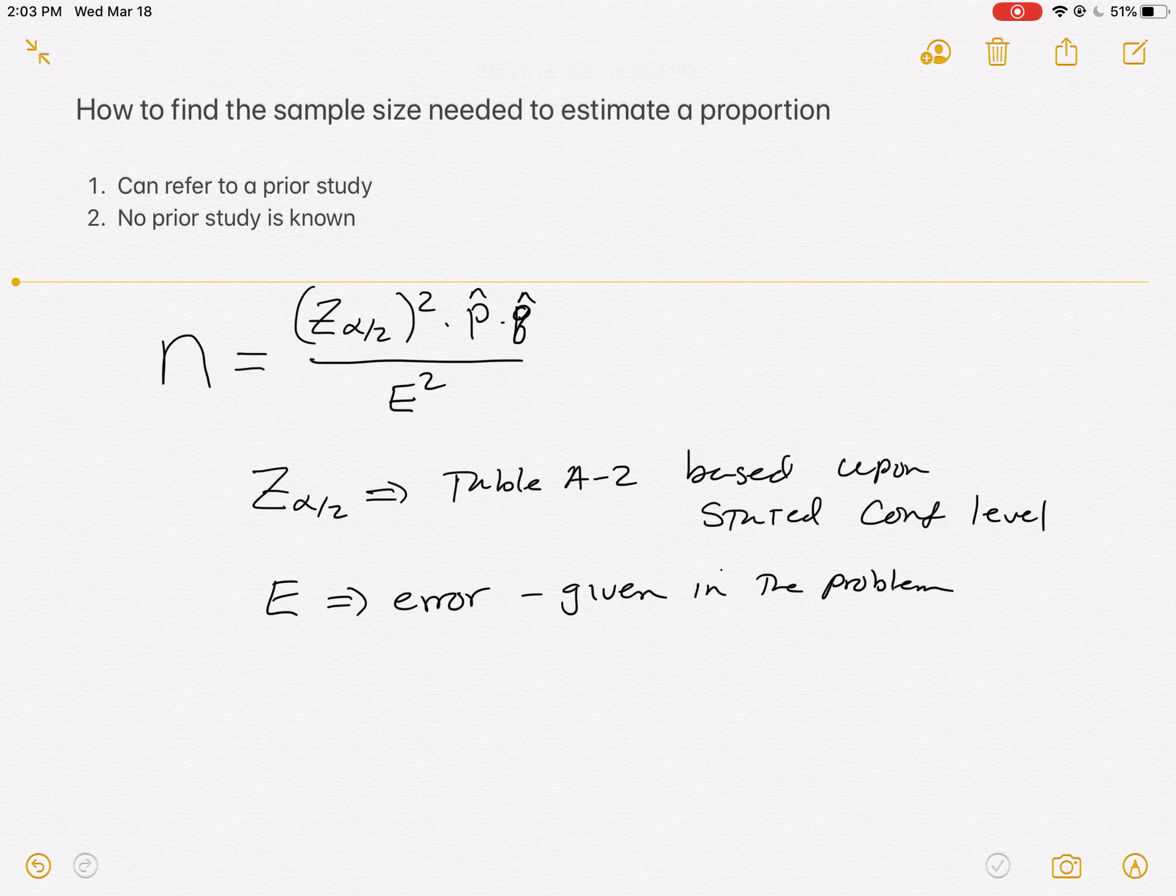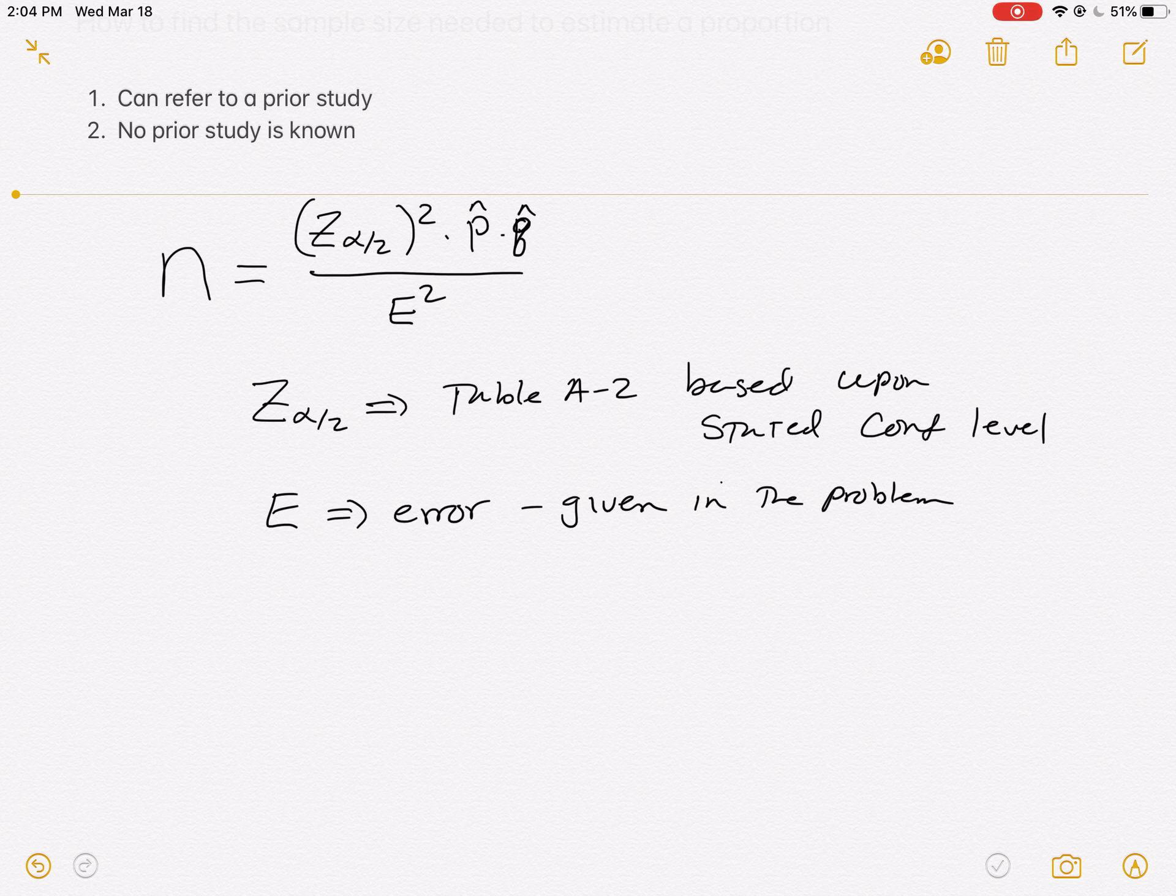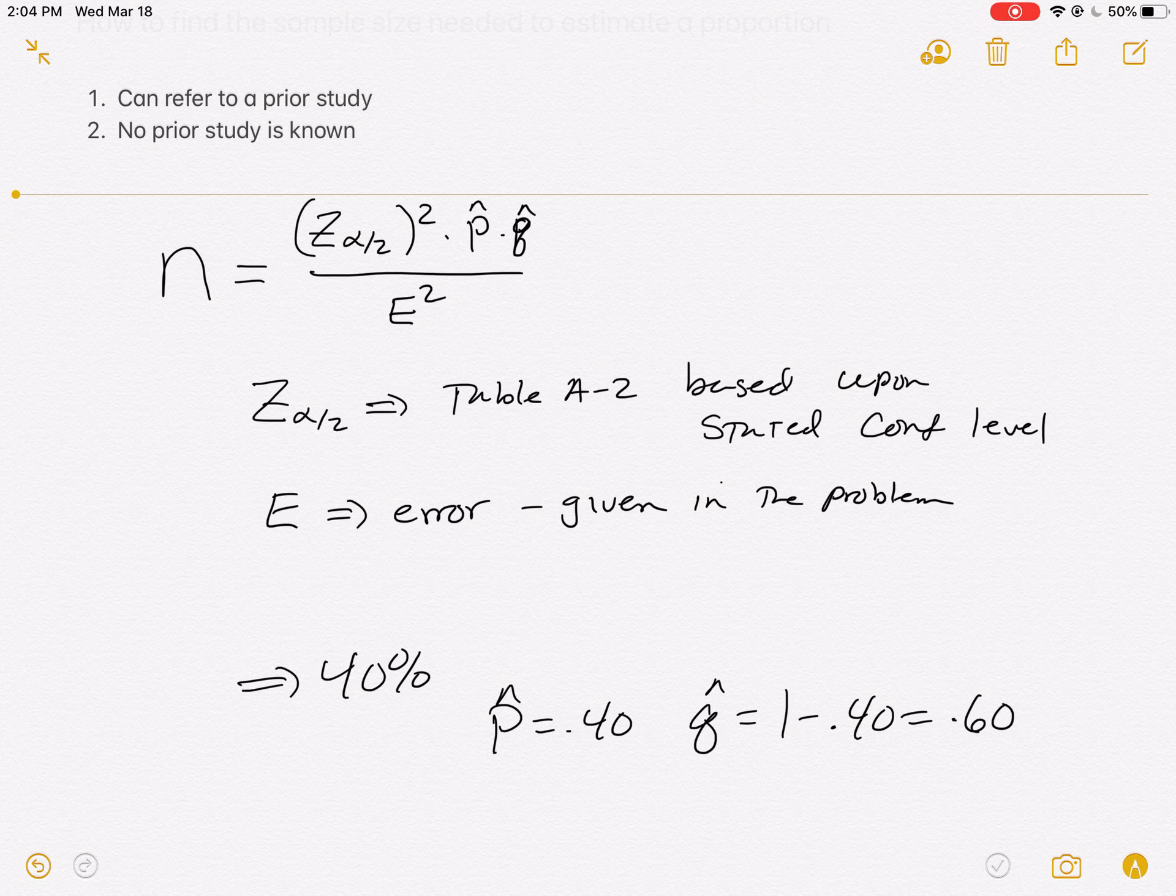The strange thing is this p hat and q hat. Those are what you think they are. They're sample proportions and then 1 minus that sample proportion. So there's two things that can happen. Either they've referred to a prior study and we just drop those numbers in. For example, they may say that the last time we looked at it, we had a 40% success rate. Well, that would mean p hat is equal to 0.40. And q hat's not arbitrary. It's 1 minus 0.40, so 0.60. And so we would drop those numbers in.